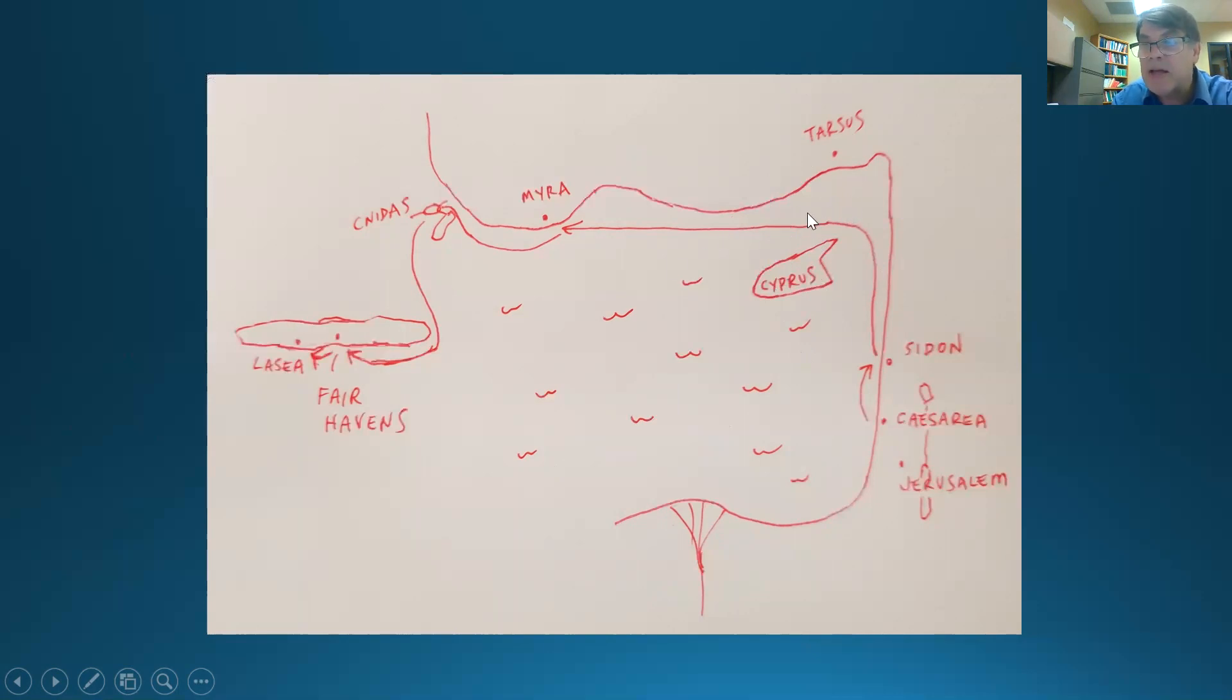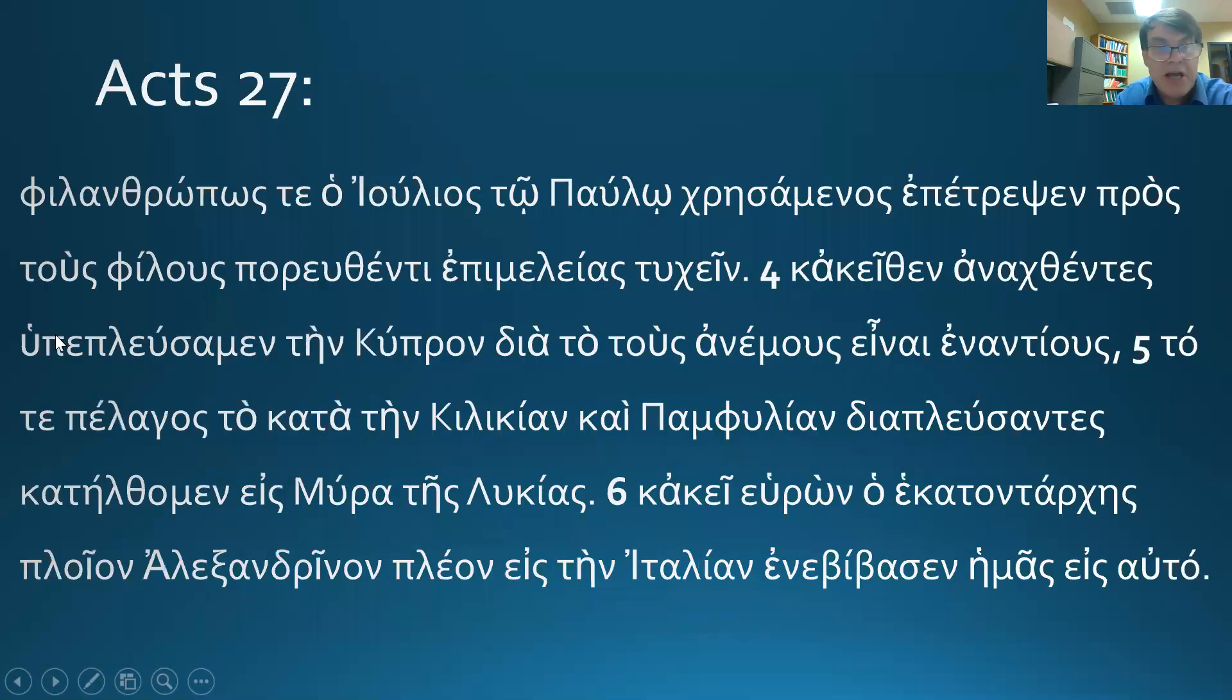So they're sailing under Cyprus. Again, this is down, this is down going this direction. This is down in the way they think. And so this is safer, right? This Pelagos, this open sea, is a safer place than out here. Out here, this is bad. Don't sail out here. Don't do it, man. And so they're sailing on the safe side, staying closer to the land. So we sailed under, or to the lee side of Cyprus because of the winds being hostile. Dia to infinitive is a causal construction on account of the winds to be hostile.